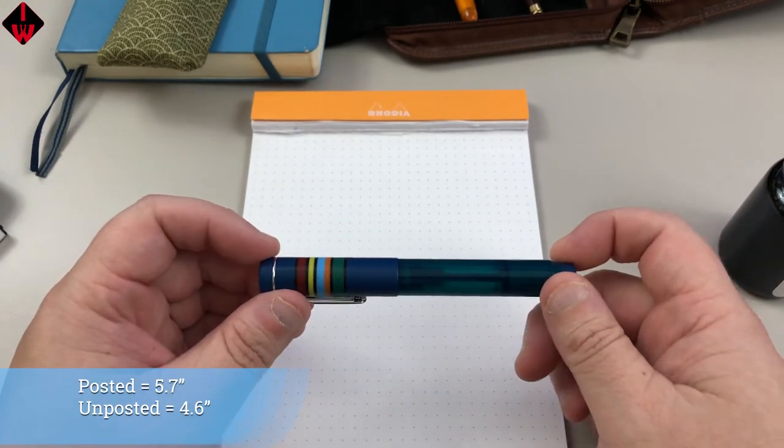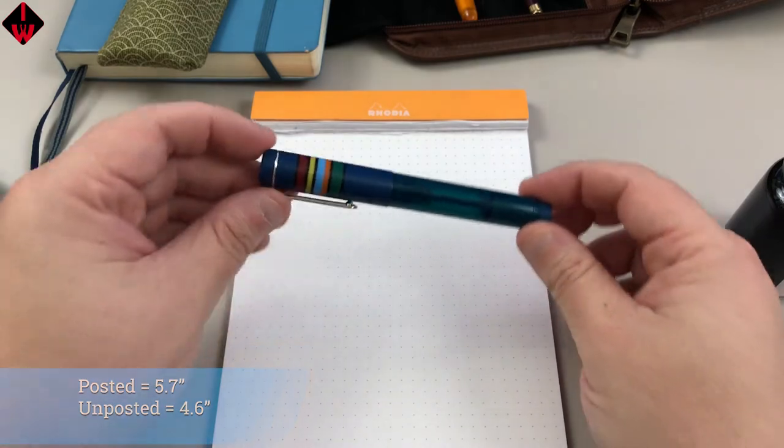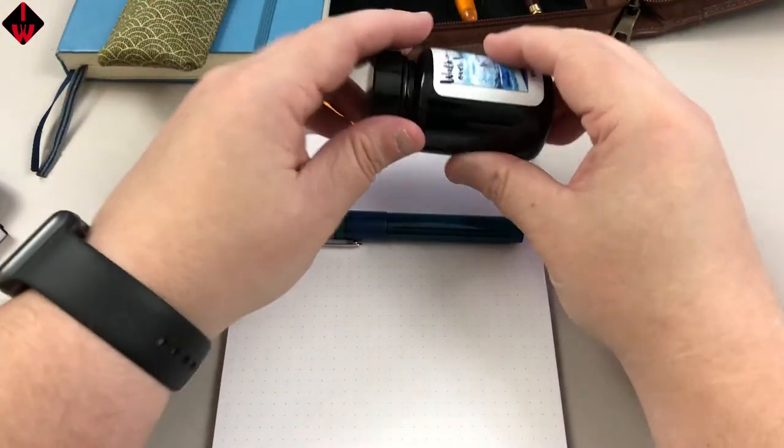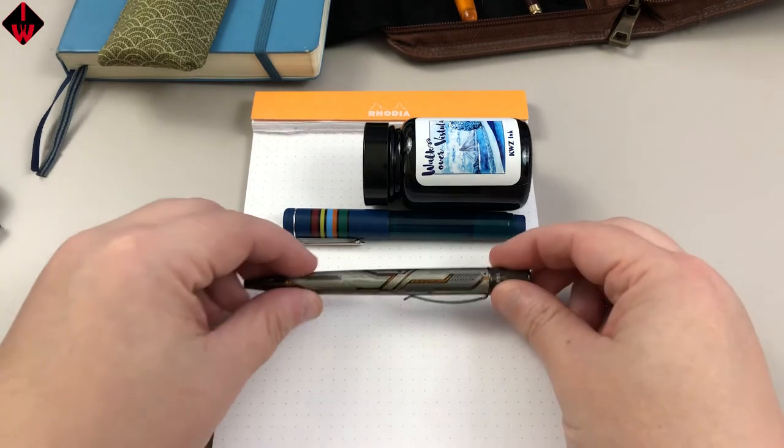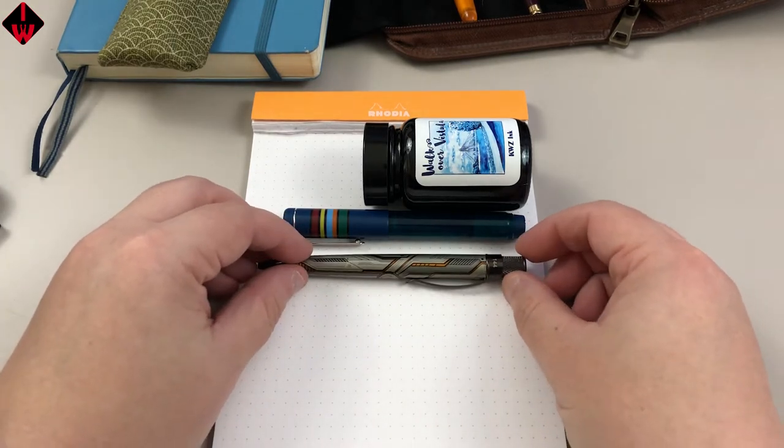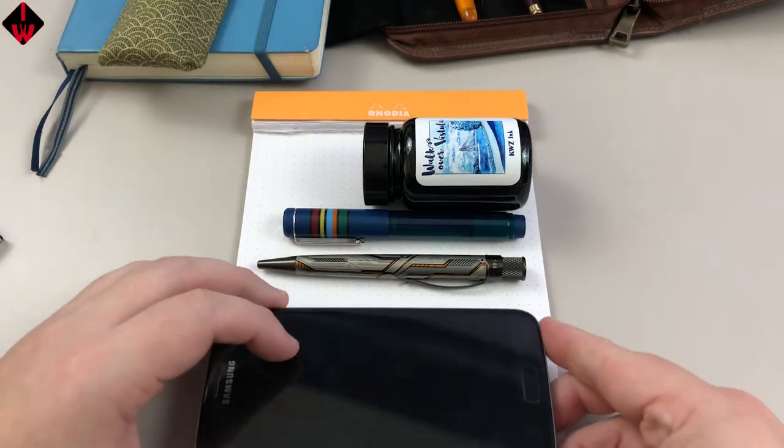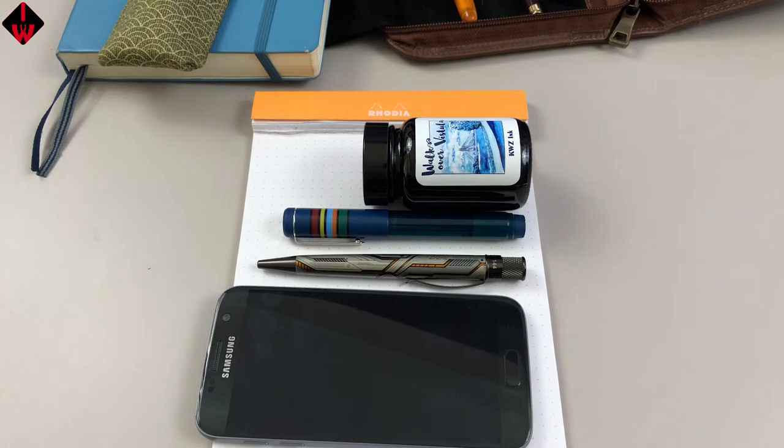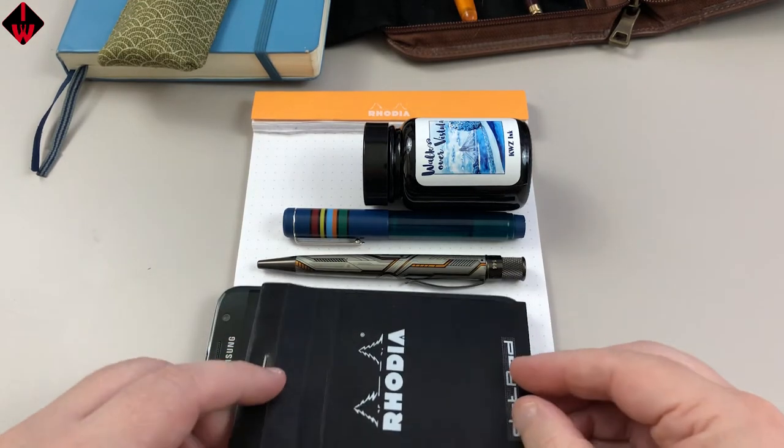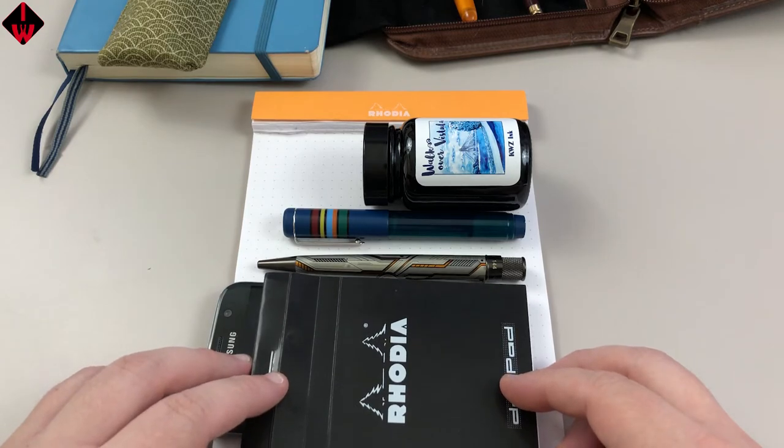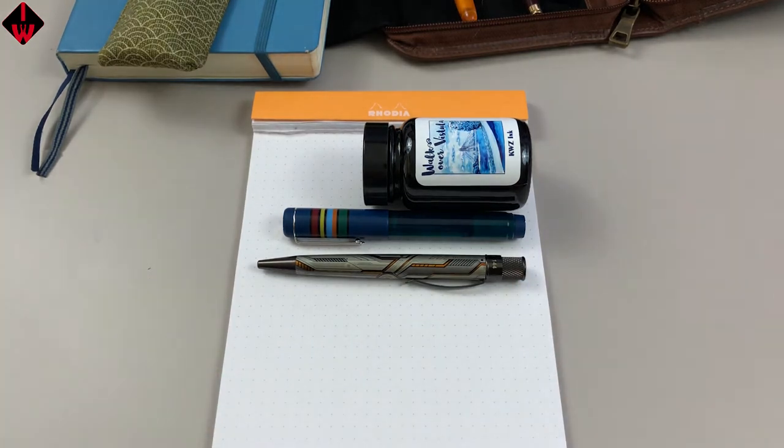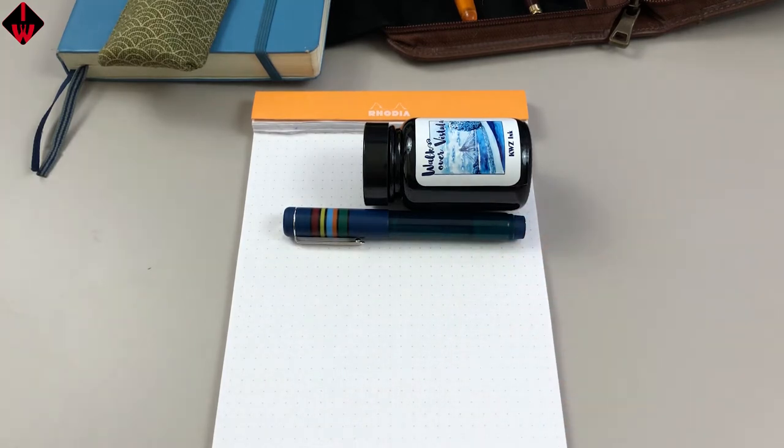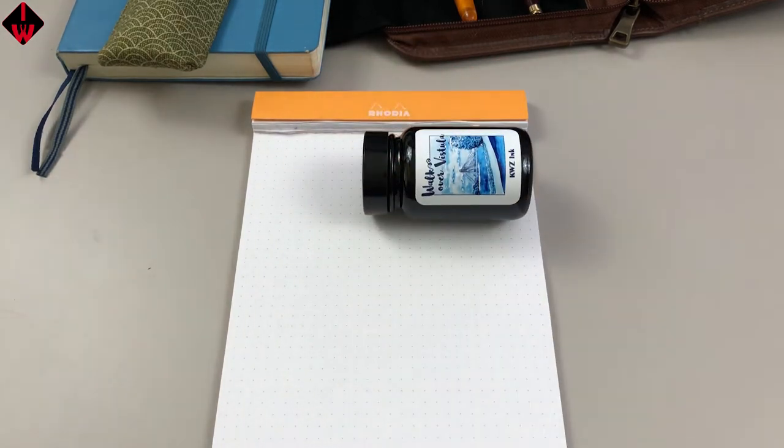So a couple things here. This is a tiny pen. For size comparison, here is the pen capped against a bottle of KWZ ink, a Retro 51 Tornado, a Samsung Galaxy S7, and for a little bit more of a pen person comparison, a Rodia Pocket Dot Pad. So as you can see it's a tiny pen, and it's a pocket pen. Notice how I picked items that were literally in my pocket earlier today. So you can tell what my pocket carry is.